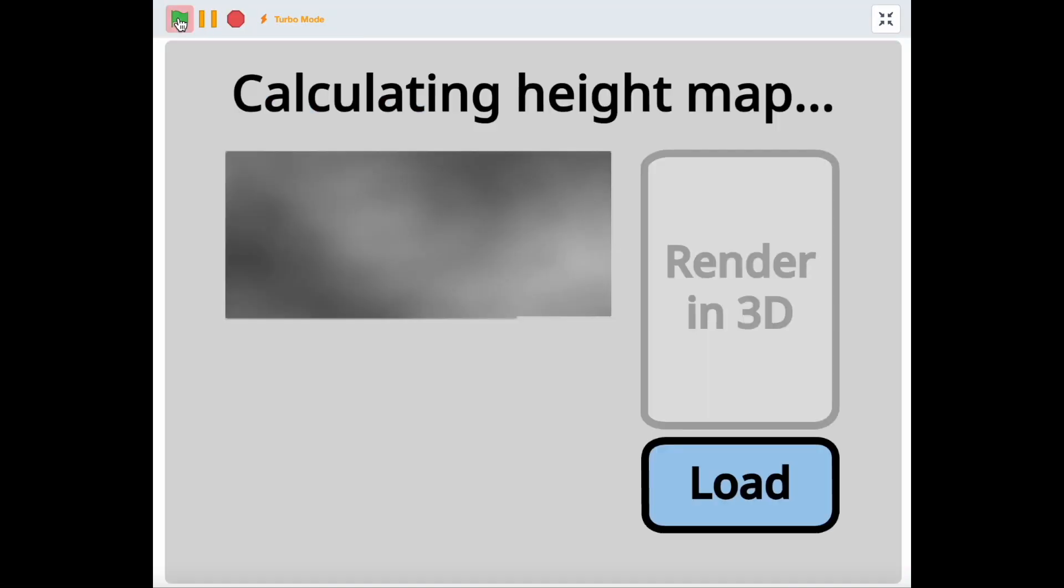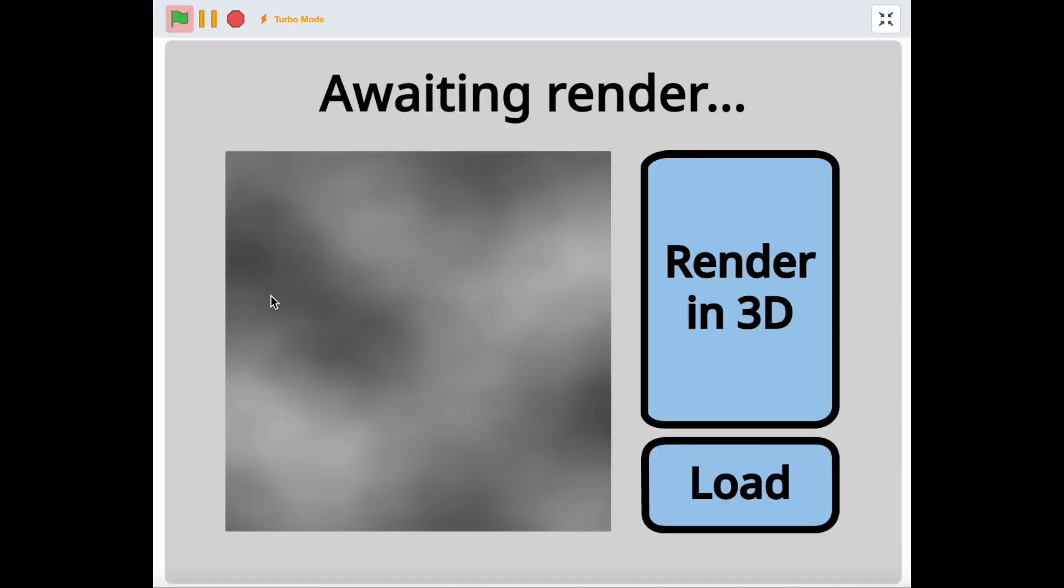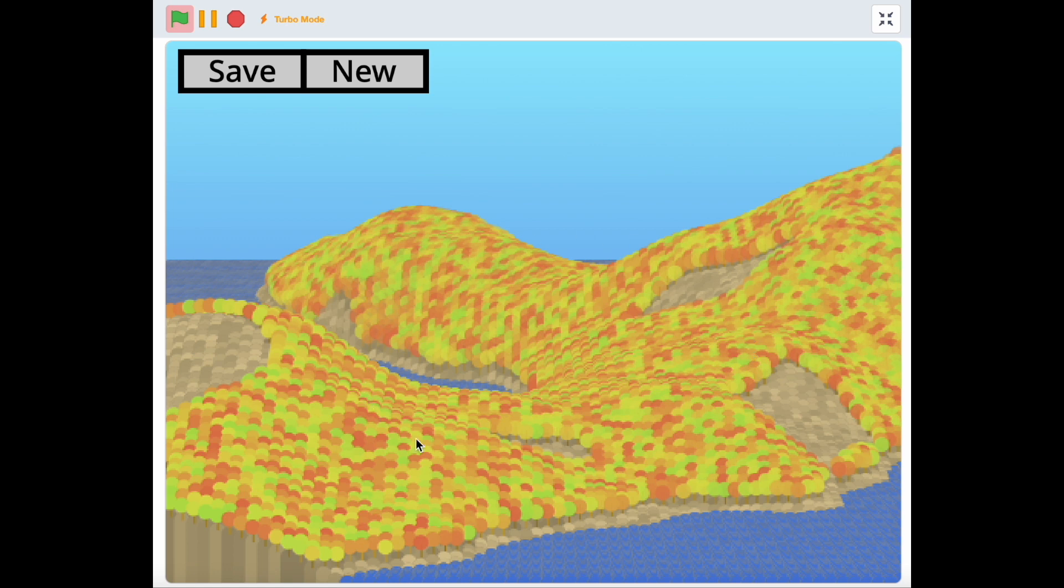When pressing the flag, the program displays an unusual blurry map in grayscale, and then gives you the option to render it in 3D. When you press Render in 3D, a realistic scene is randomly generated with water and mountains with rocky areas and colorful trees.